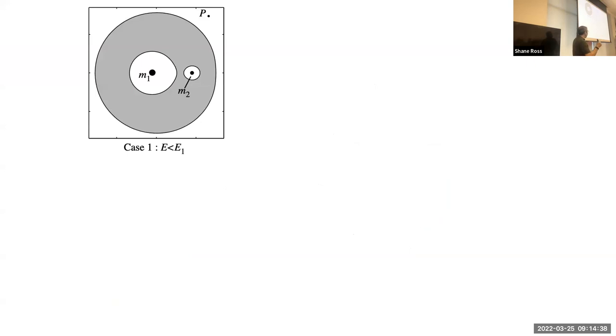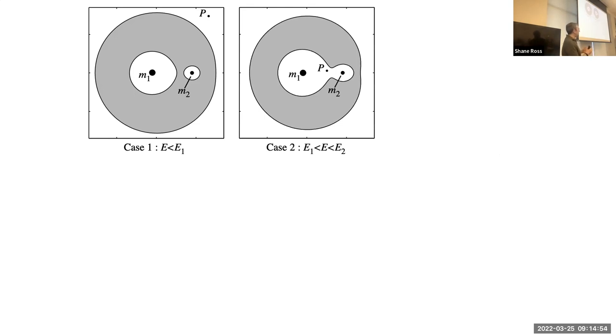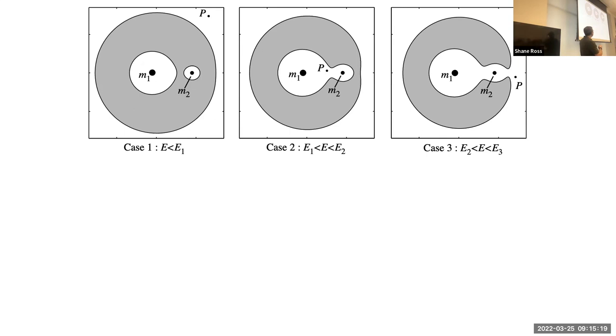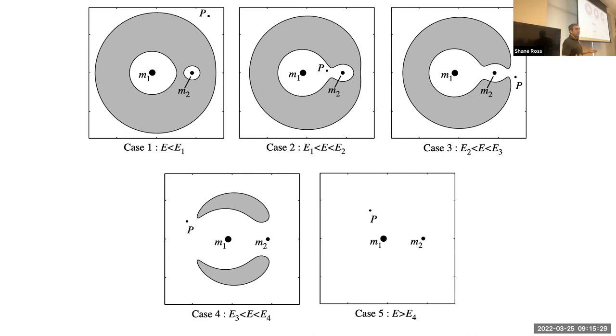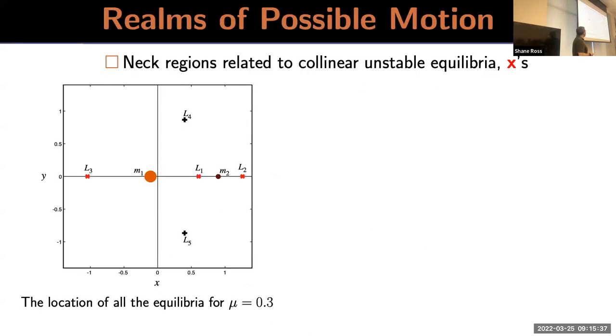As you change energy, at the very lowest energies you're either entirely in orbit around the first mass, the larger mass, or entirely in orbit around the second mass. This is where Keplerian orbits dominate and you don't even worry about three-body effects. As you increase energy, these things are opening up. L1 is the first one that opens up. What I mean is the energy connectivity opens up. The thing in gray is energetically inaccessible. The boundary is called a zero-velocity curve because that's where kinetic energy goes to zero.